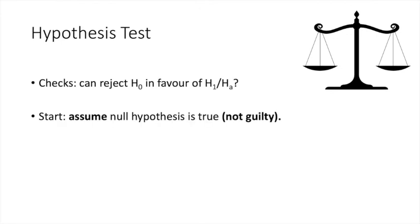A hypothesis test runs in a similar way to a legal trial, in which a defendant is considered innocent until proven guilty. The null hypothesis corresponds to the proposition that the defendant is innocent, while the alternative hypothesis corresponds to the proposition that the defendant is guilty. At the start of the experiment, the null hypothesis is assumed to be true. That is, at the start of the trial, the defendant is assumed to be innocent.